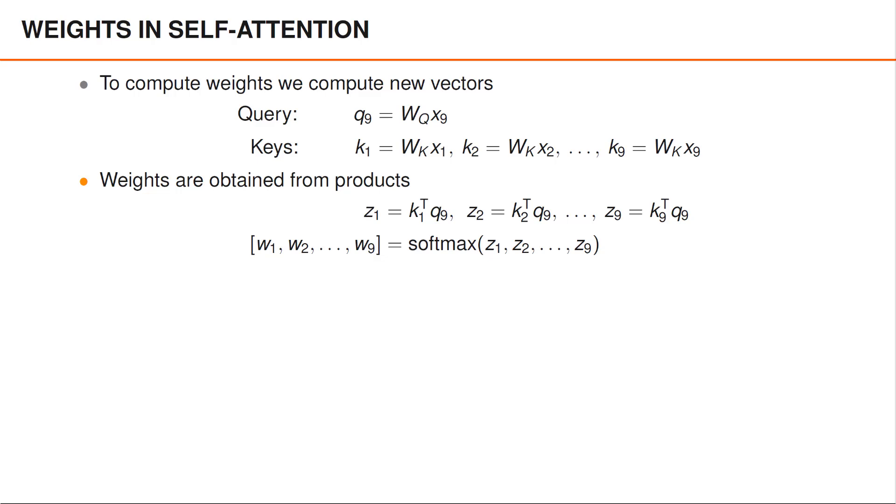Finally, we pass the Z values through a softmax to obtain the weights used to compute a new word embedding for the word friend.